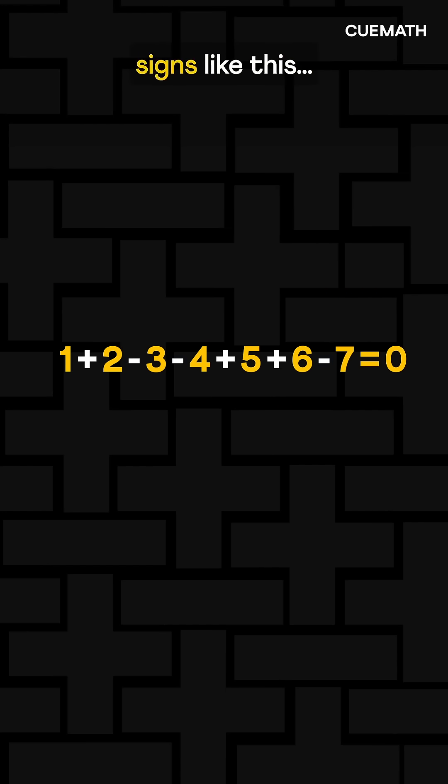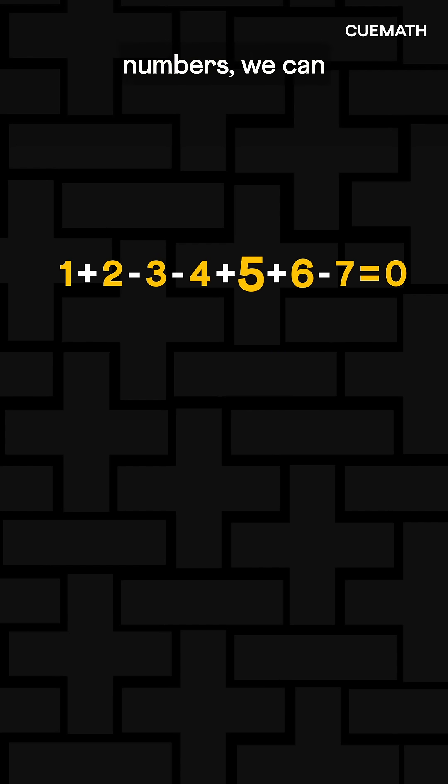What if we go up to 7? Place the signs like this, and we get a 0. So for some numbers, we can get a total of 0, but for others, we can't.